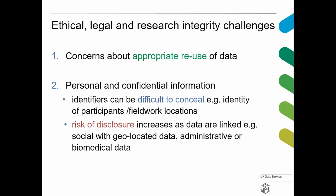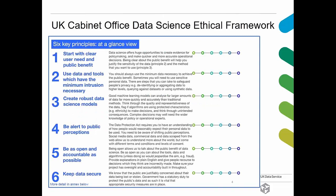In the data-sharing world there are various concerns: appropriate reuse of data, and the challenge of personal and confidential information — identifiers that are hard to conceal, such as particular characteristics of people or places, fieldwork locations. The more you merge, match, and link data together, the risk of disclosure increases. A more recent UK framework is the Data Science Ethical Framework, issued by the UK Cabinet Office, giving a set of principles for high-quality research. There will be a link to this document.